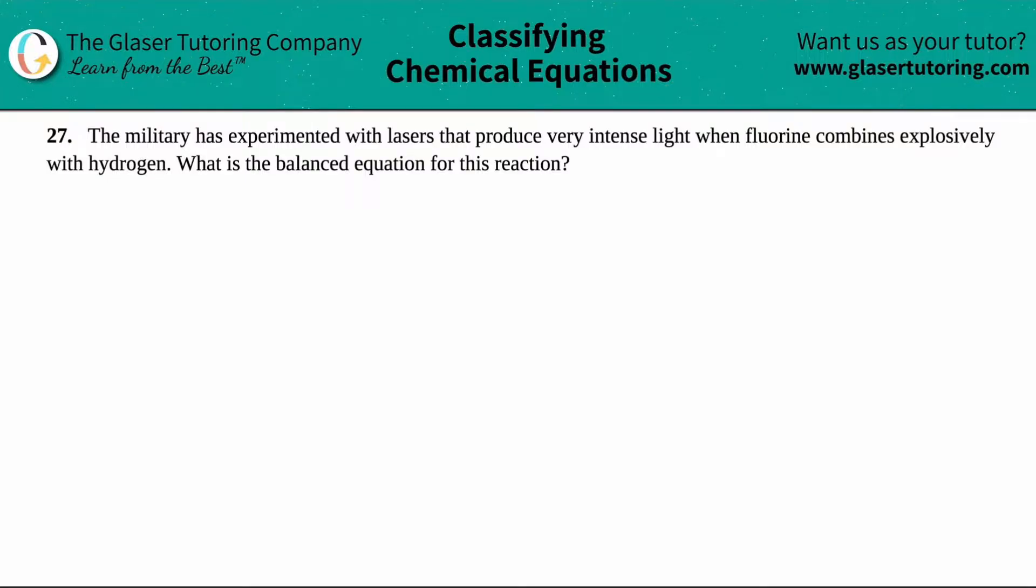Number 27. The military has experimented with lasers that produce very intense light when fluorine combines explosively with hydrogen. What is the balanced equation for this reaction? Okay. They told us this cool example, but this equation just comes from fluorine combining explosively, AKA reacting. So all that it is, is just fluorine is reacting with hydrogen. So basically we have fluorine plus hydrogen.